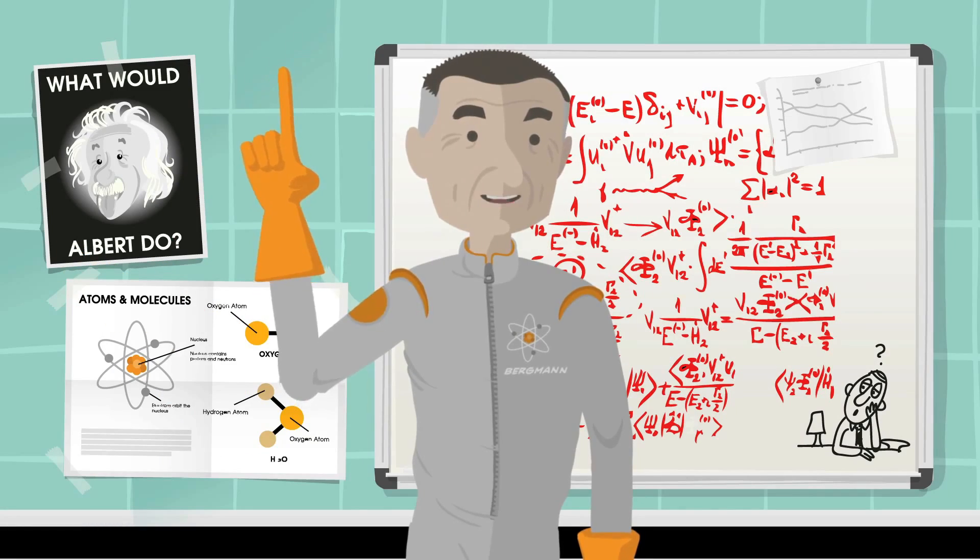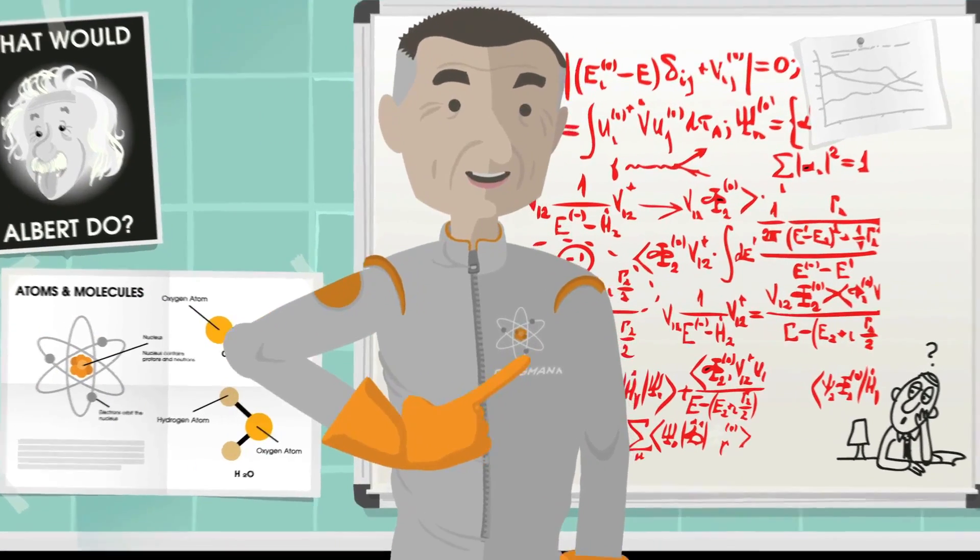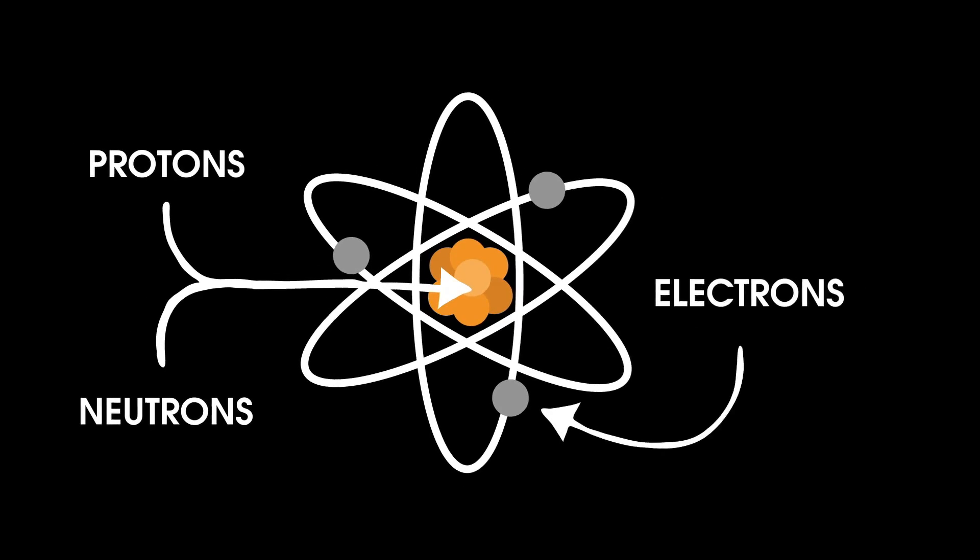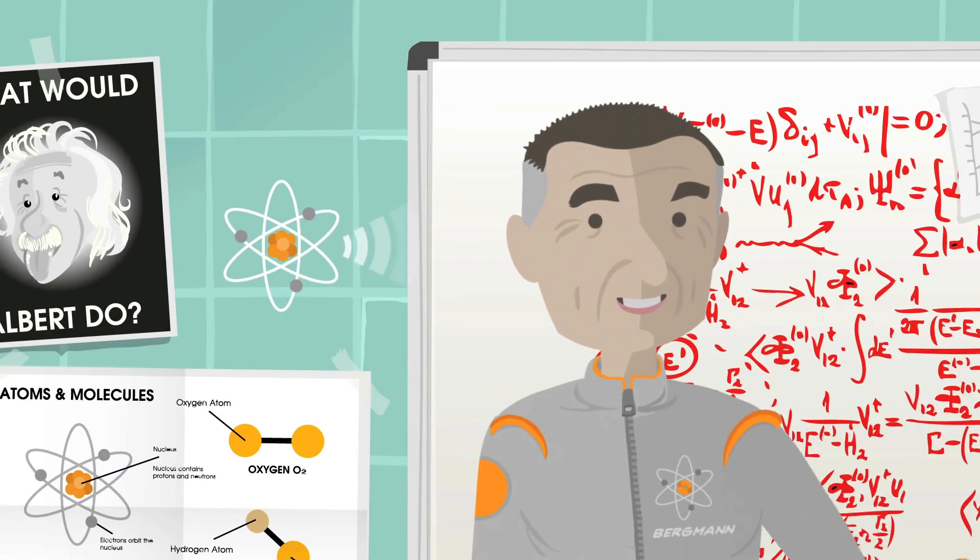You probably already know that everything is made up of little tiny things called atoms. You might even know that each atom is made up of even smaller particles called protons, neutrons, and electrons.